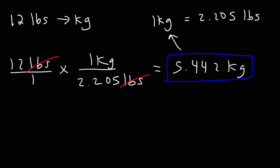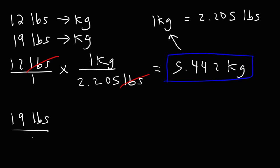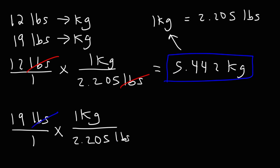Now let's try another example: convert 19 pounds to kilograms. Go ahead and try that. Following the same procedure, we multiply 19 pounds by 1 kilogram divided by 2.205 pounds. So 19 divided by 2.205 is equal to 8.617 kilograms.